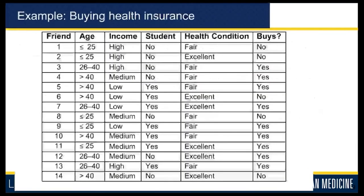Let's start with an example of buying health insurance. You are in the market to buy health insurance and you are asking friends of yours whether they have bought health insurance and what their characteristics are, what their features are, and how similar they are to you. Based on that, you are going to make that decision. In this exercise, you have collected information from 14 of your friends — so there are 14 data instances.